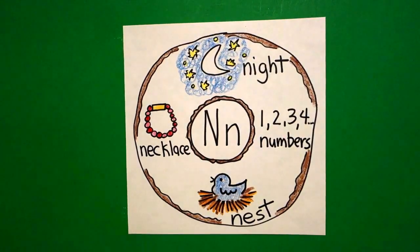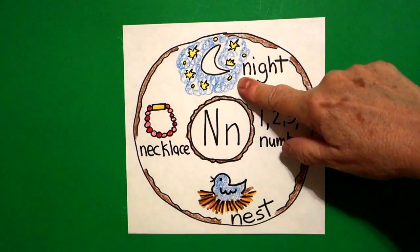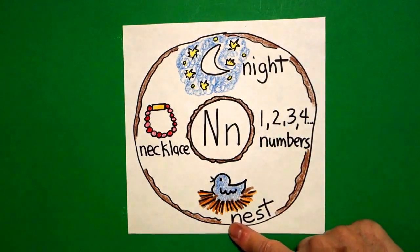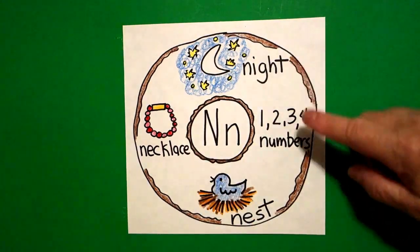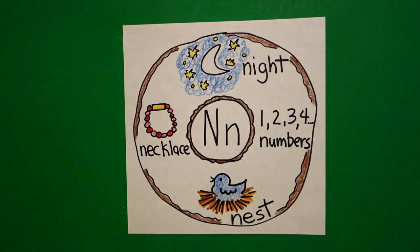Okay, here's my alphabet donut for the letter N, beginning sound N, night, numbers, nest, necklace. Night, numbers, nest, necklace. Okay, bye-bye. Thank you.